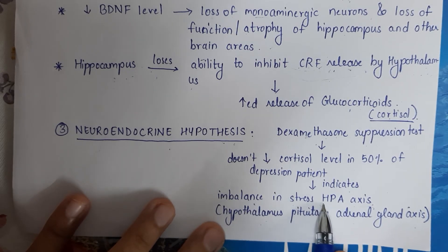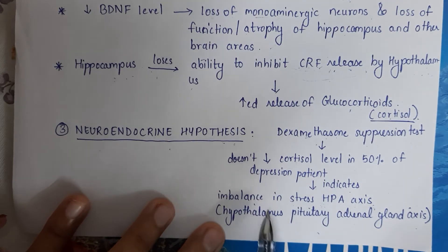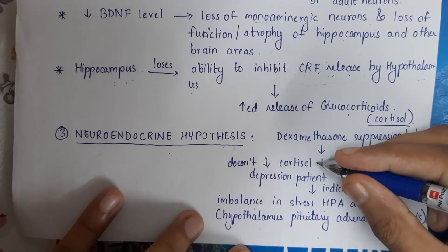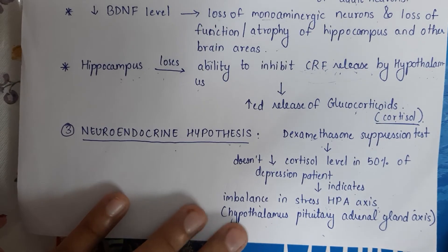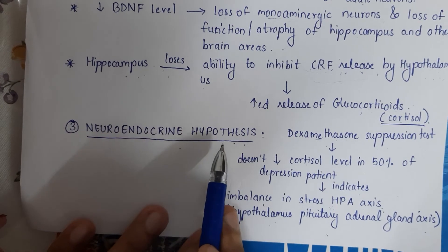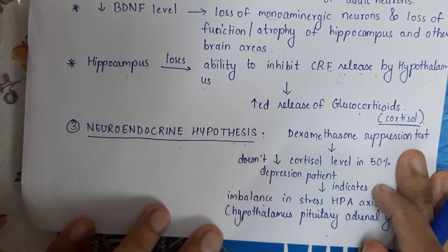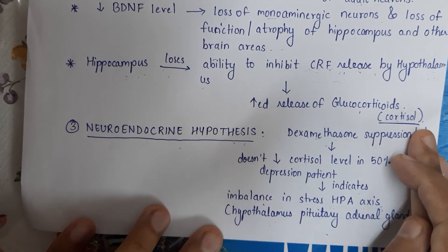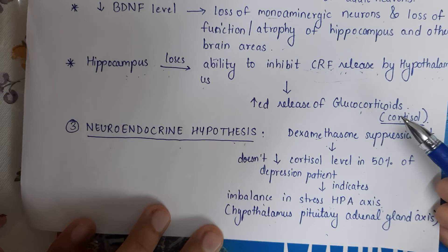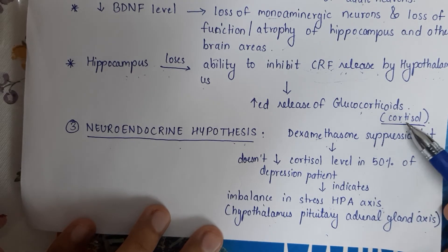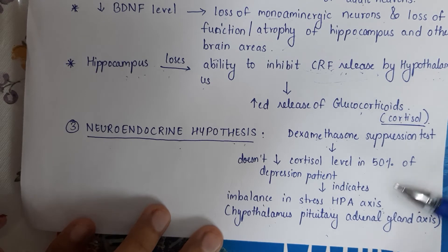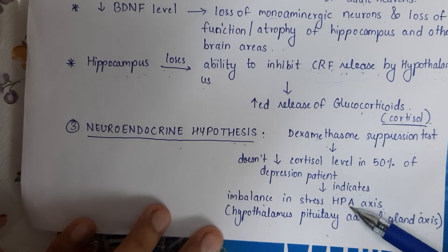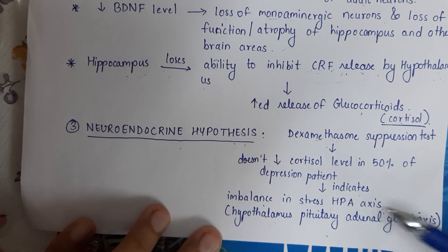The HPA axis is the hypothalamus-pituitary-adrenal gland axis. There is an imbalance — something is wrong in this axis — and that's why the cortisol level is not decreasing. Going through the neuroendocrine hypothesis again: dexamethasone suppression test was done, and instead of decreasing cortisol, it was found that cortisol is not decreasing. This led to the finding that there is a dysregulation of the HPA axis.